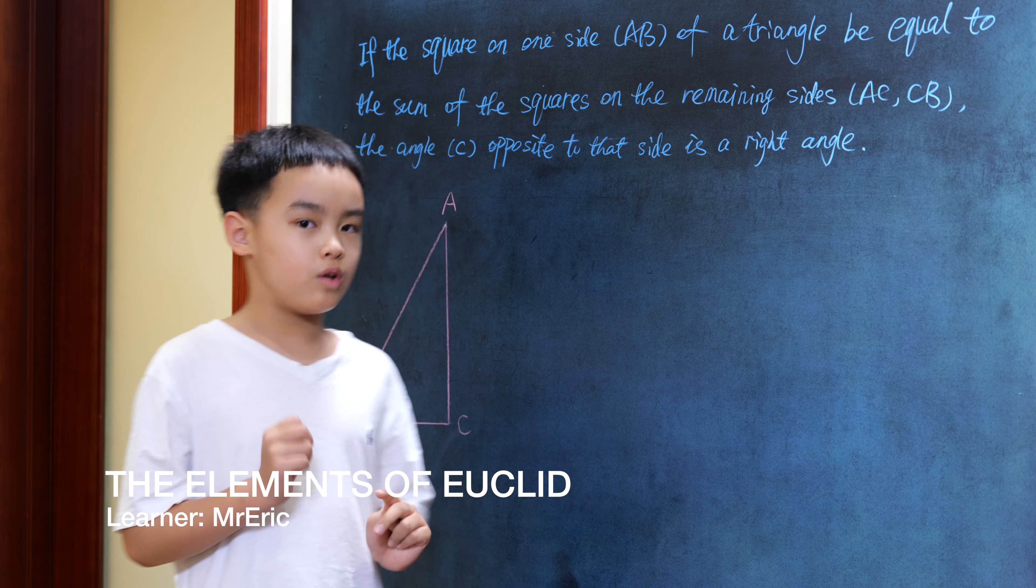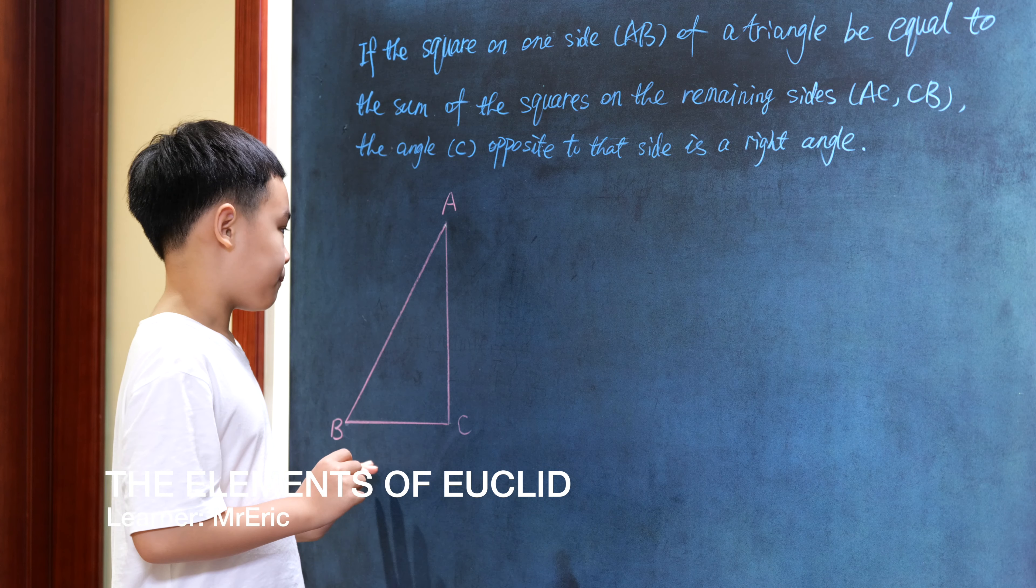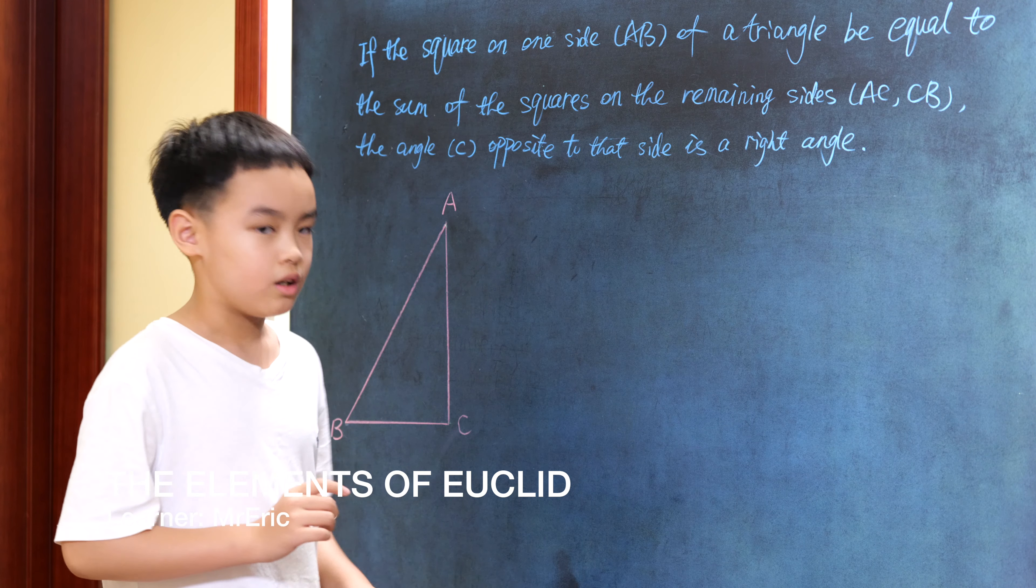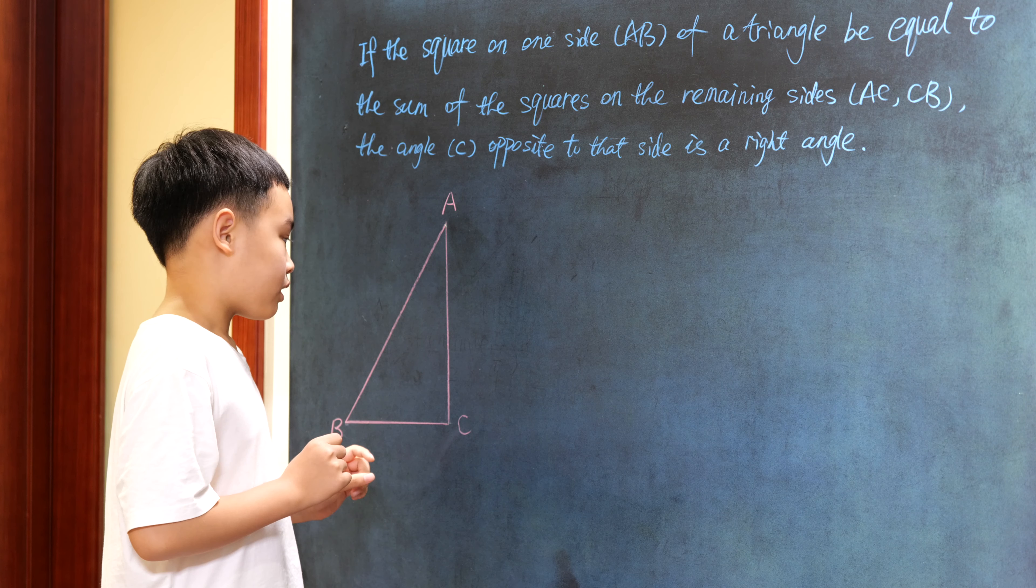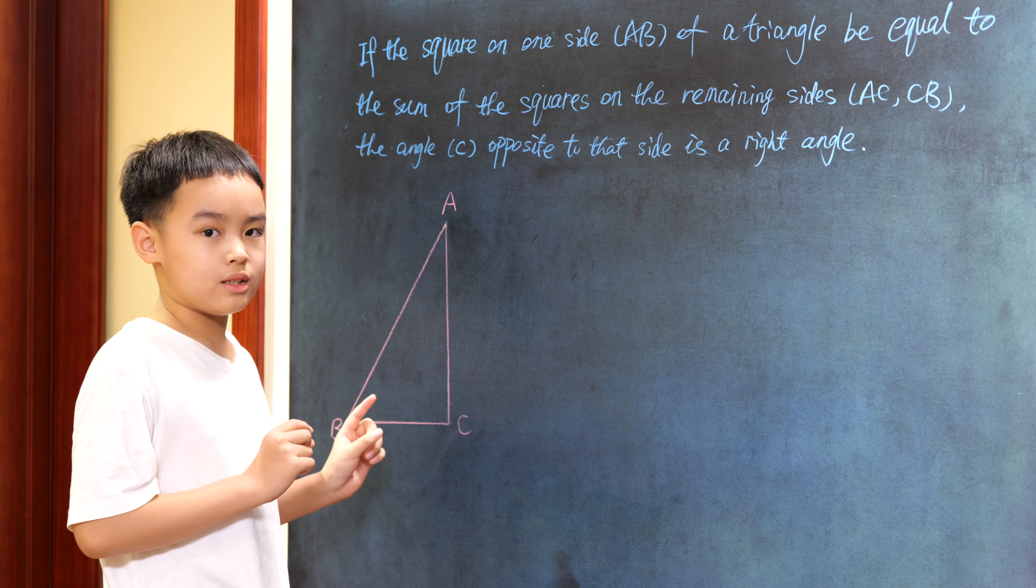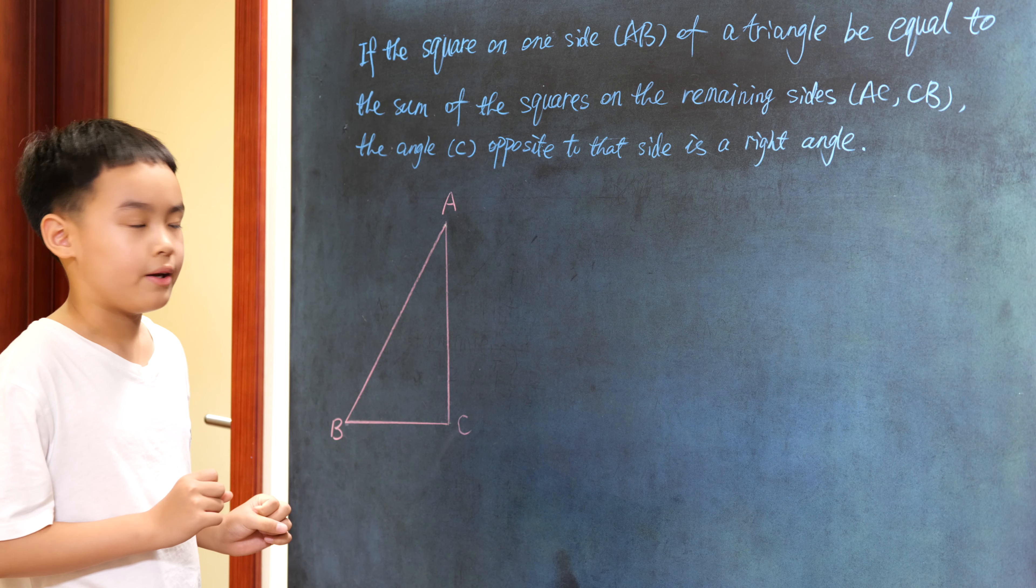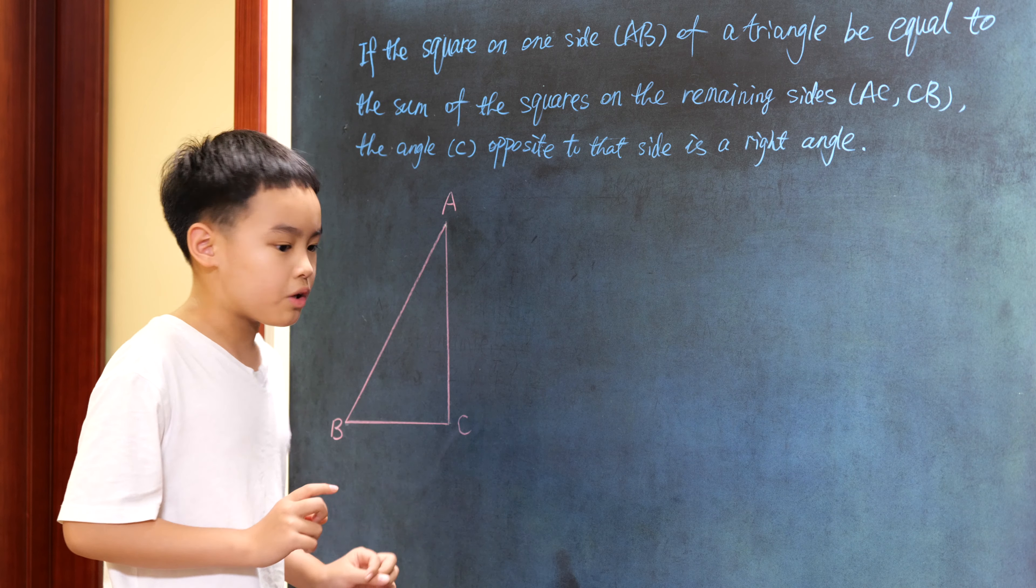To prove this theorem, at point C make a line perpendicular to line AC, and on that line cut off a part equal to CB. We'll call that point D and draw the line AD.